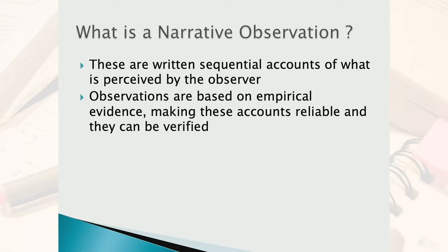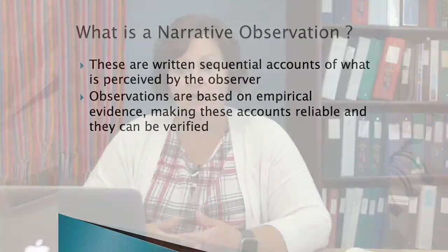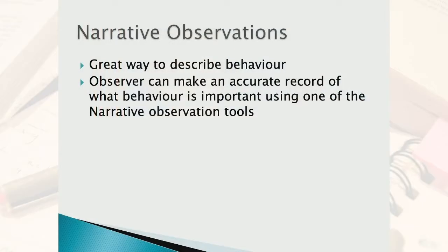These types of narrative observations are based on facts occurring at specific times, and they are reliable evidence that you can verify. A lot of our observations in the early years with children are based on narrative types of information. It is a really great way to describe behaviors. You're being objective and recounting that sequence of events from actual facts happening in the moment, recording what behavior is important using some type of narrative tool.